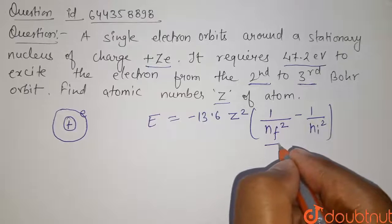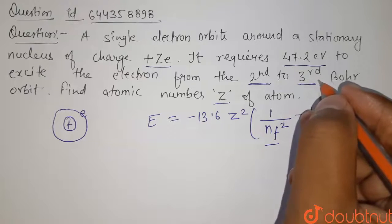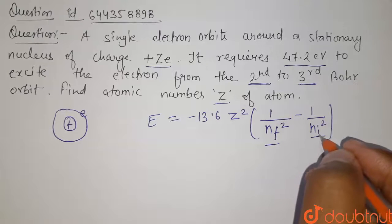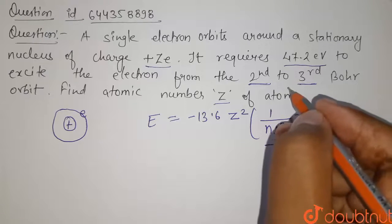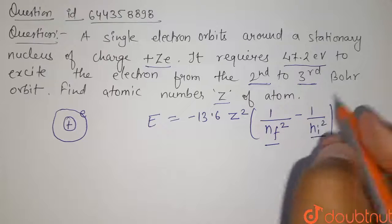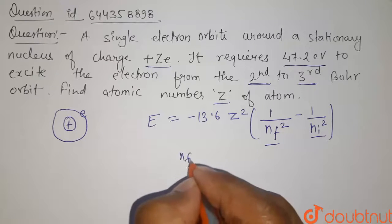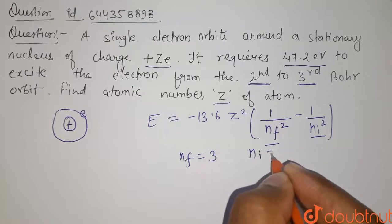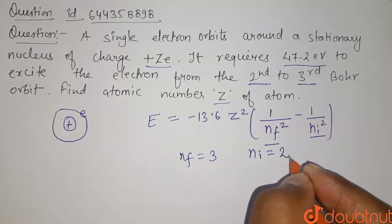Here n final is the orbit in which the electron is reaching and n initial is the orbit from which the electron is exciting. So the value of n final here will be 3 and value of n initial will be equals to 2.